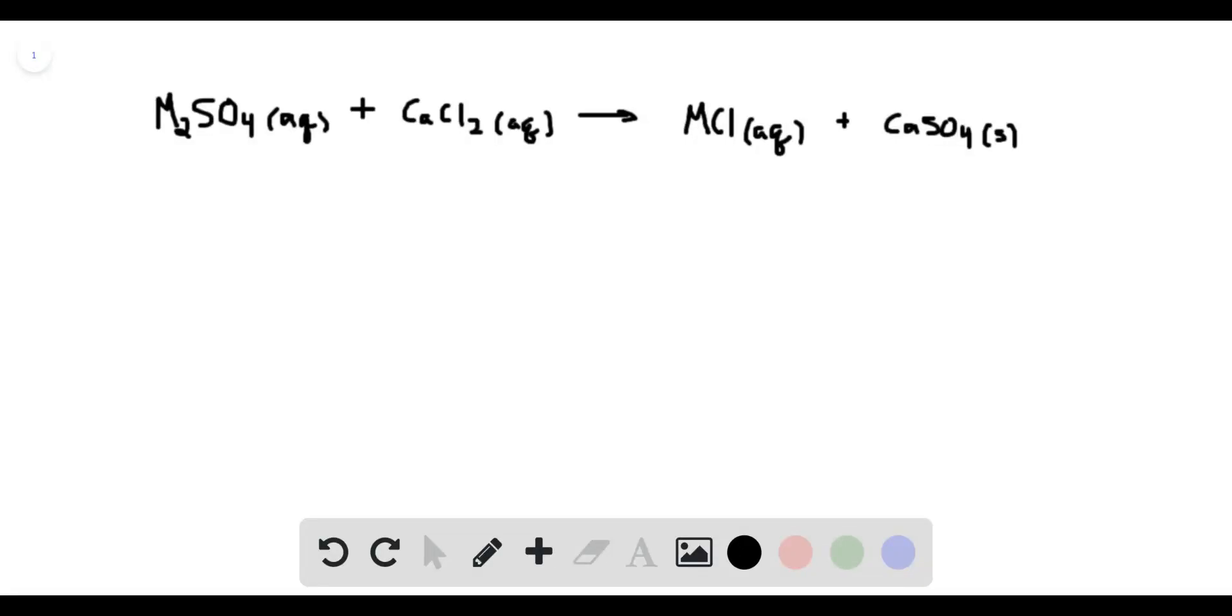This question says a 1.42 gram sample of a pure compound with formula M2SO4 was dissolved in water and treated with excess calcium chloride, aqueous calcium chloride, resulting in the precipitation of all of the sulfate ions as calcium sulfate.